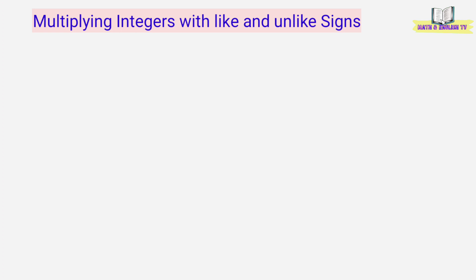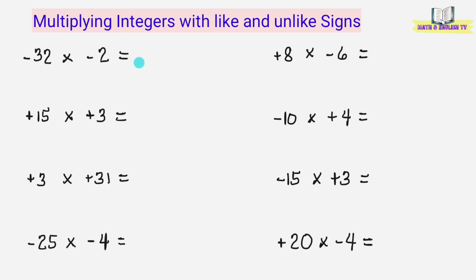In multiplying integers, we just multiply the numbers and put the sign in the product. The product of two integers with like signs or the same signs is always positive. And the product of integers with unlike or different signs is always negative.